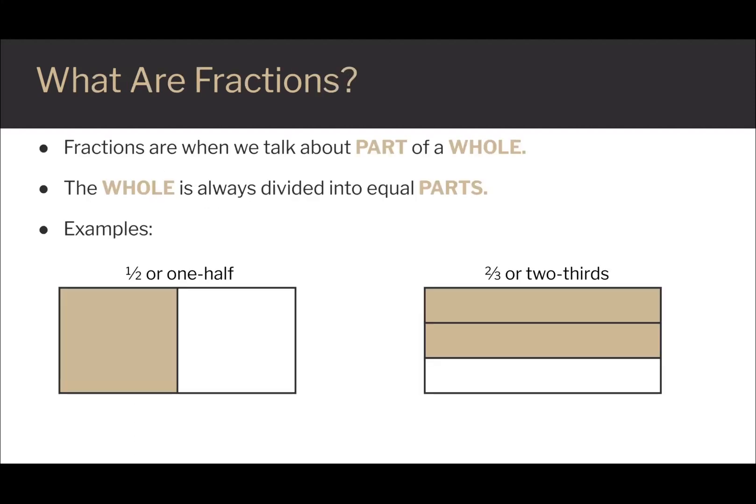What are fractions? Fractions are when we talk about part of a whole. The whole is always divided into equal parts. For example, with one half, the whole is made up of two parts, and if one is shaded, it is one half. For two thirds, the whole is split into three parts, and two parts are shaded.